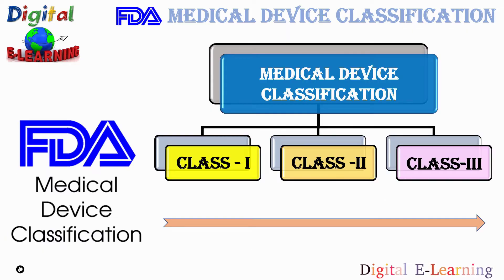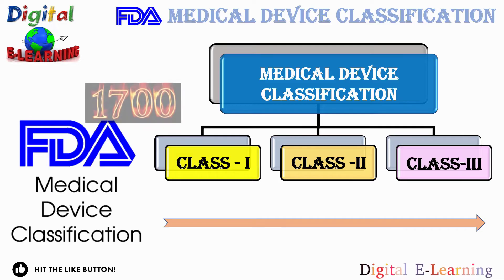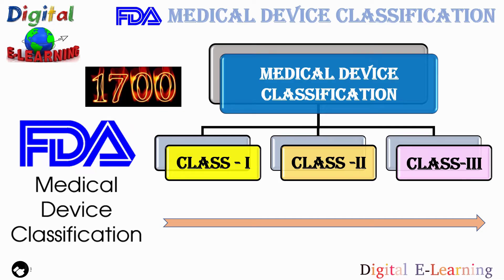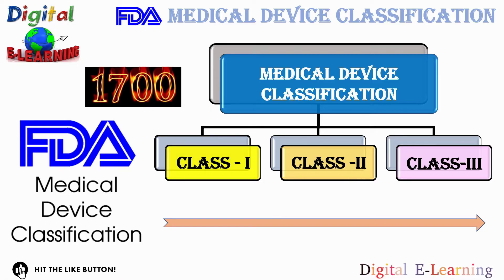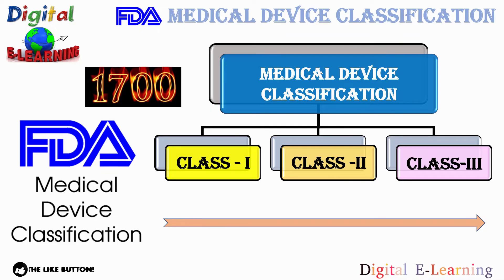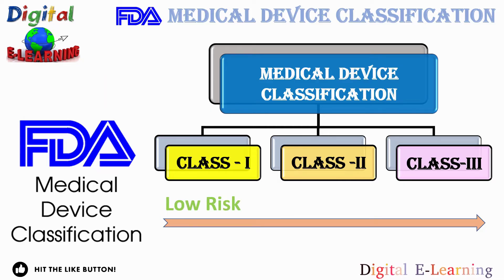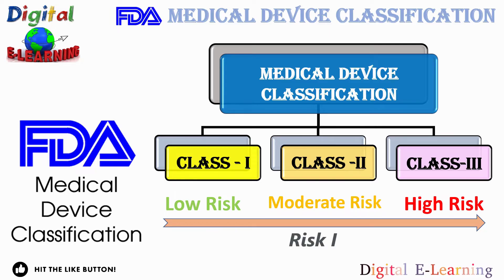The FDA has established classification for around 1700 different generic types of devices. In order to better regulate these devices, the FDA has divided them into 16 different specialties called panels. Each device is classified into Class 1, Class 2, or Class 3. This classification is assigned on the basis of the risk the medical device presents to the patient. Class 1 is low risk, Class 2 is moderate risk, and Class 3 is high risk. As the risk increases from Class 1 to Class 3, the level of regulatory control also increases.